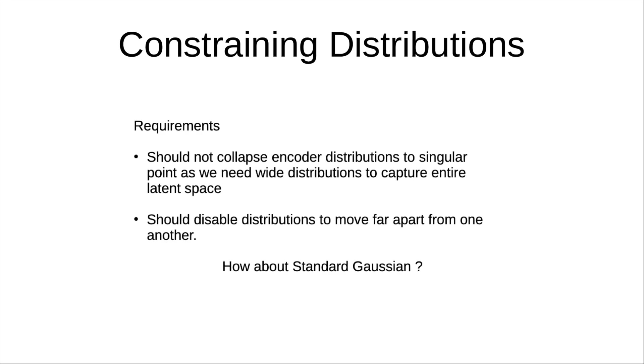We must constrain the distributions in a manner that disables the encoder from collapsing those to a single point, and they are also constrained to not move far apart from each other. With these two objectives, we can see that if we demand these distributions to be similar to a standard Gaussian, then that will allow us to achieve both objectives.